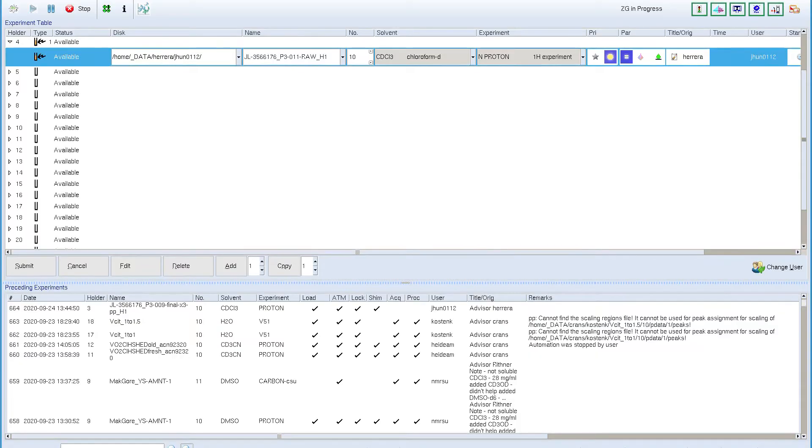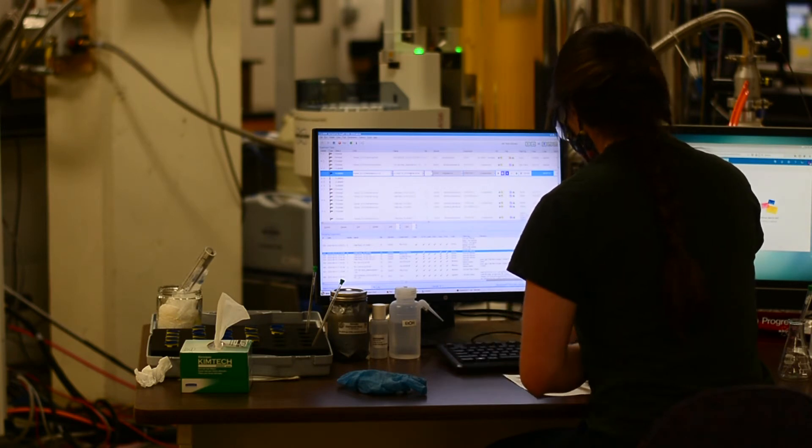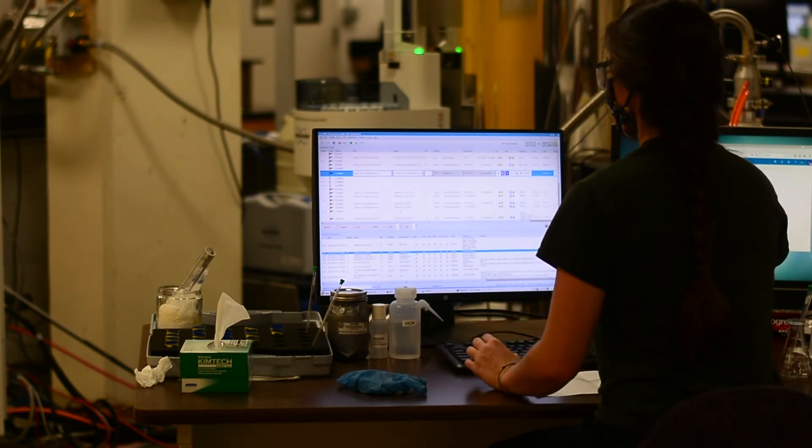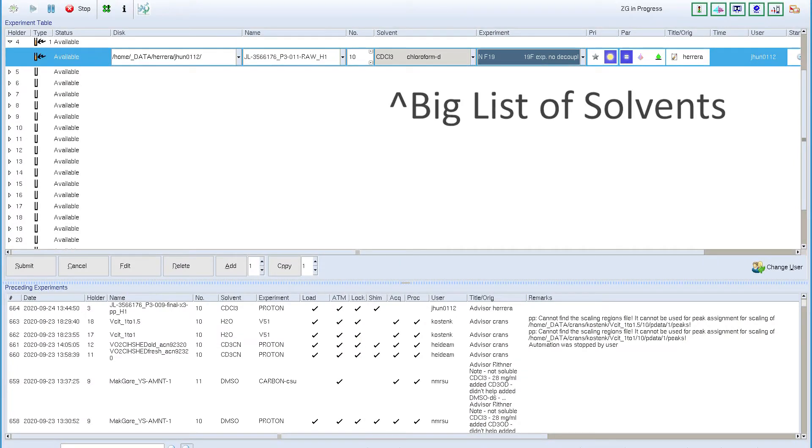Name your sample something that makes sense to you, avoiding special characters. Use only numbers, letters, dashes, and underscores. The experiment number field will automatically populate, so you can move on to the solvent and select your solvent from the list in the drop down.